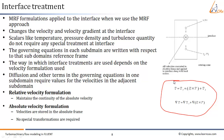Now let us look at the treatment when the absolute velocity formulation has been selected. When the absolute velocity formulation is used, the governing equations in each subdomain are written with respect to that subdomain's reference frame, but the velocities are stored in the absolute frame. Therefore, no special treatment is required at the interface because absolute velocities are available and can be transferred as-is. The scalars are also transferred as-is.